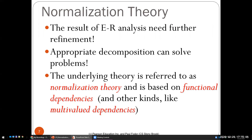This decomposition is based on a theory called normalization. It takes the result of ER or UML analysis — one unrefined set of tables — and applies a mathematical formalism to find all functional dependencies, including keys and other dependencies like city always having the same zip code. These functional dependencies direct the decomposition, which solves the problems we identified.